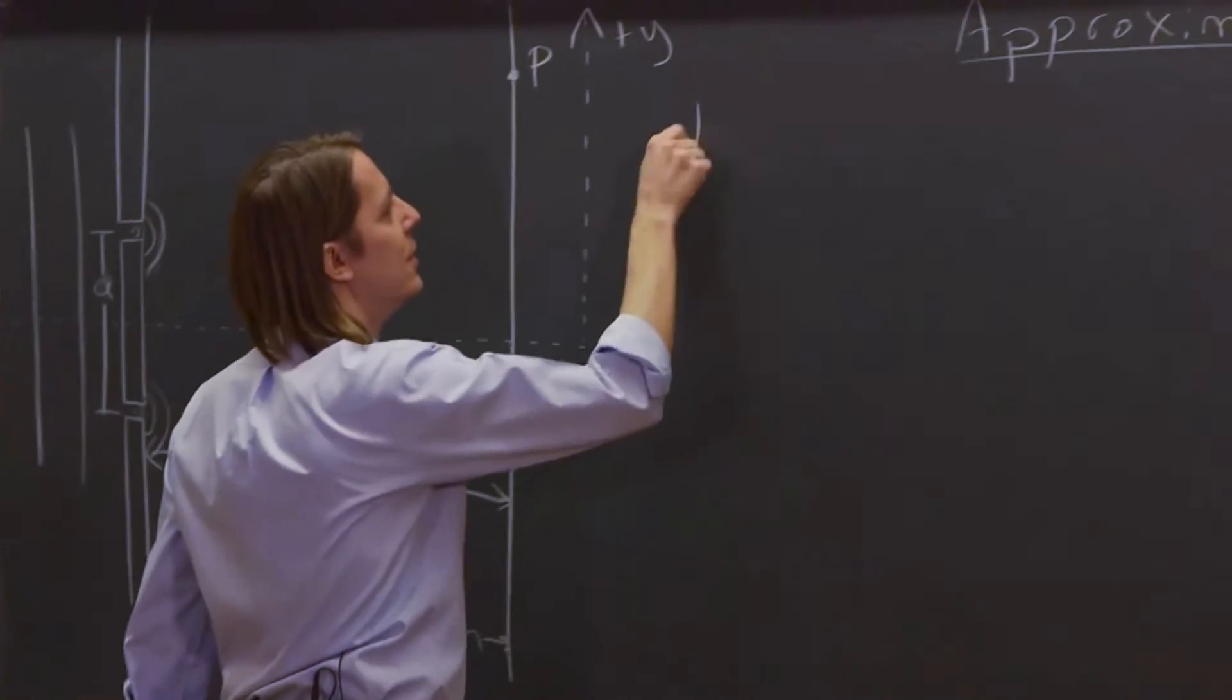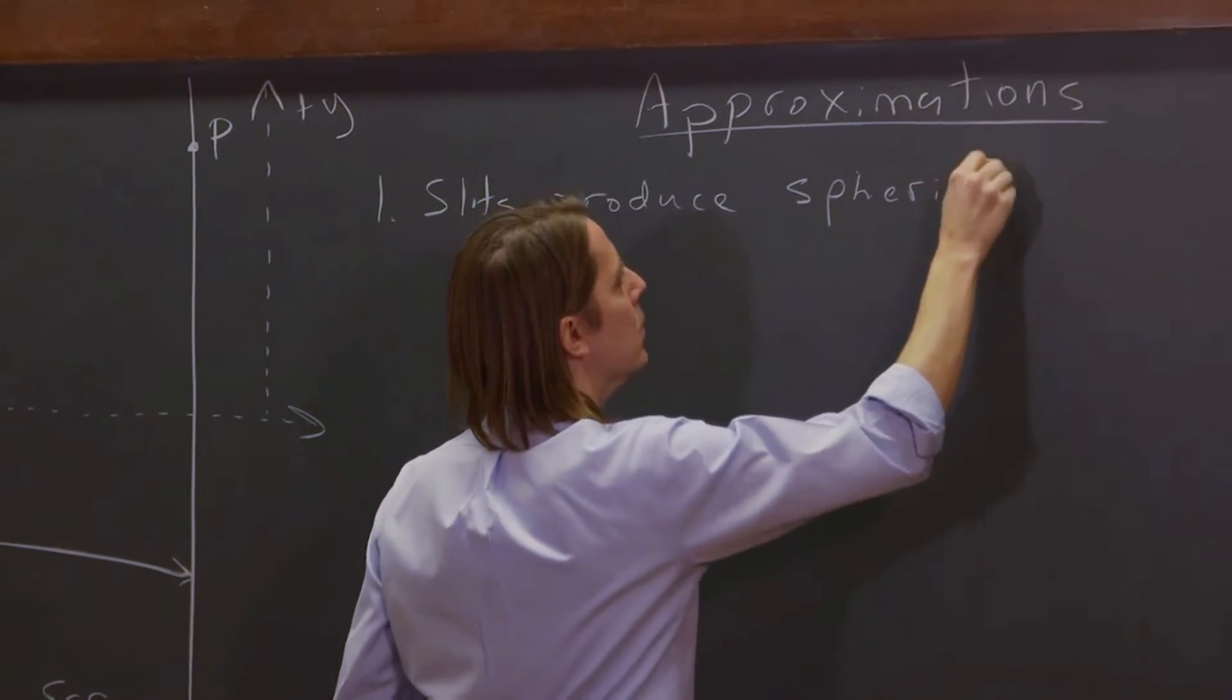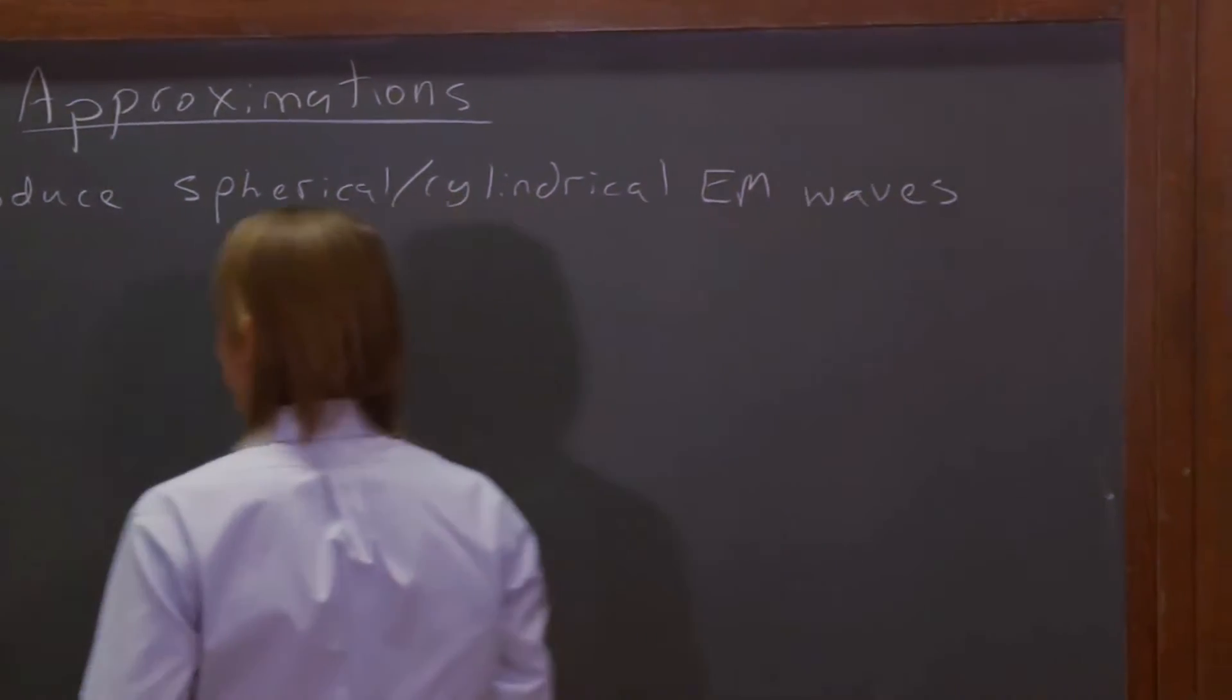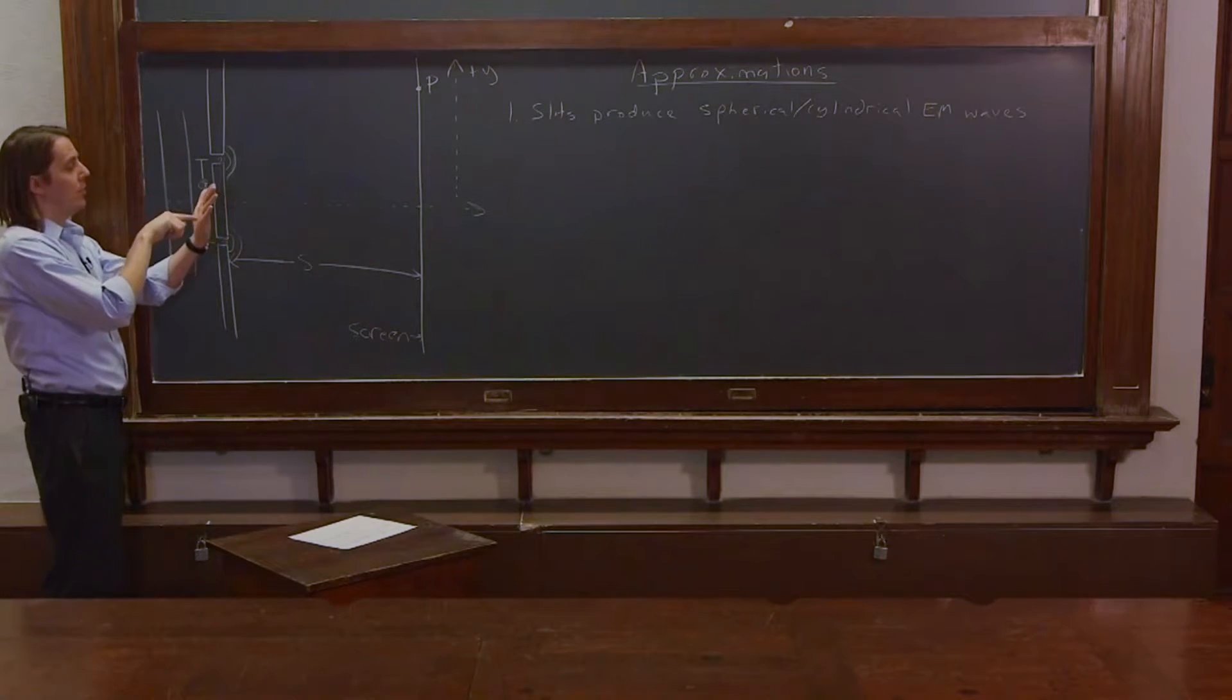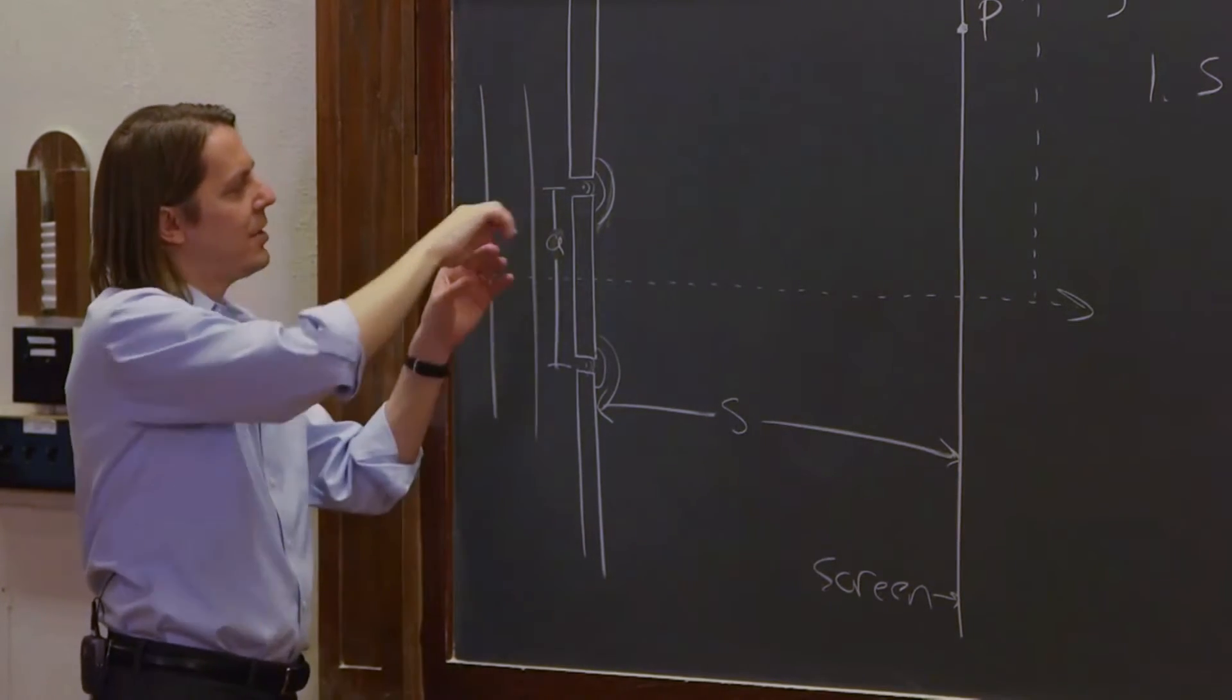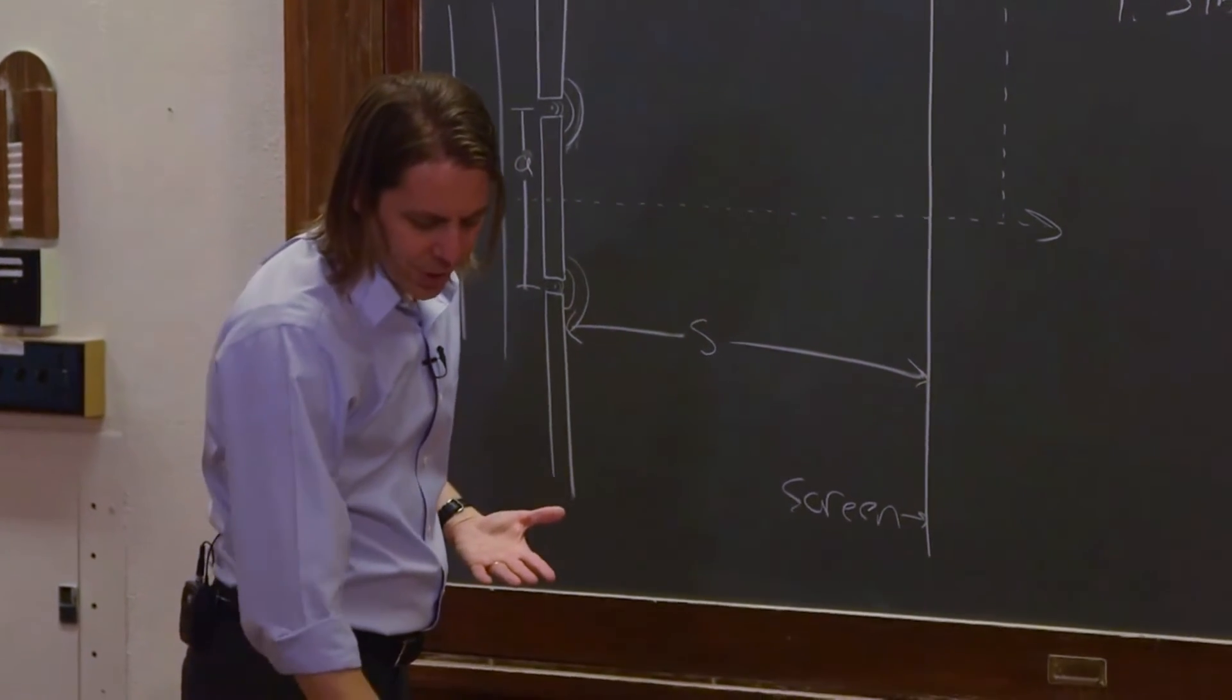One approximation we have to make is that the slits produce, I'll put spherical slash cylindrical EM waves. If this is a hole in a round aperture-type hole in a screen, it'll come out as a spherical wave. If it's really a one-dimensional slit in the plane of the board, it'll make sort of a cylindrical wave, because there'd be a bunch of these little wavelets like this, and they're all going forward. It really doesn't matter, because of the next sentence of our approximation.